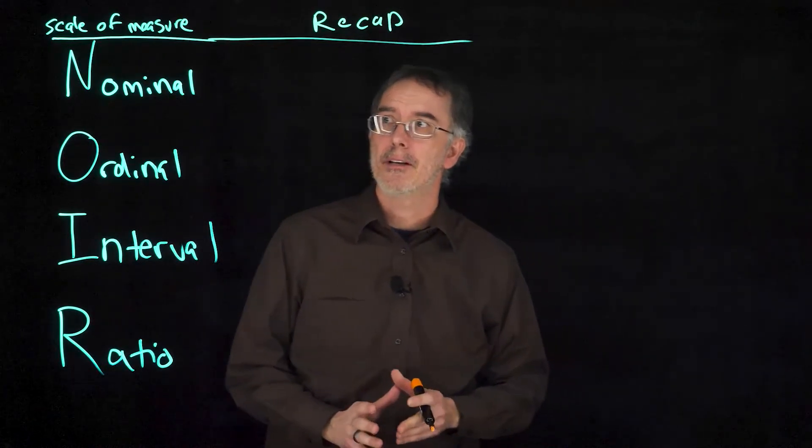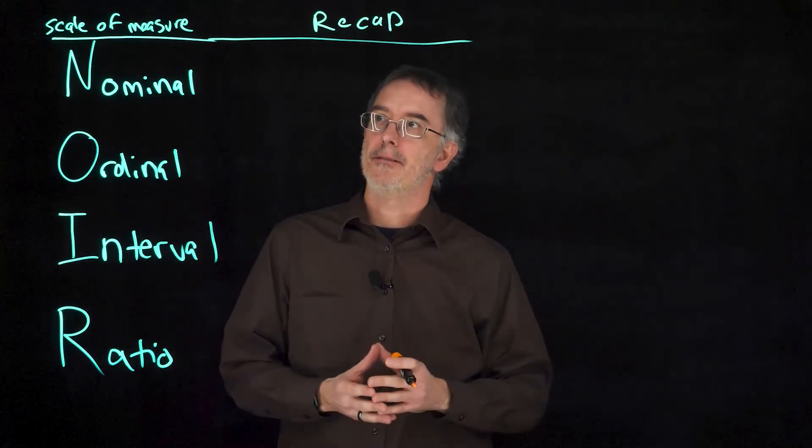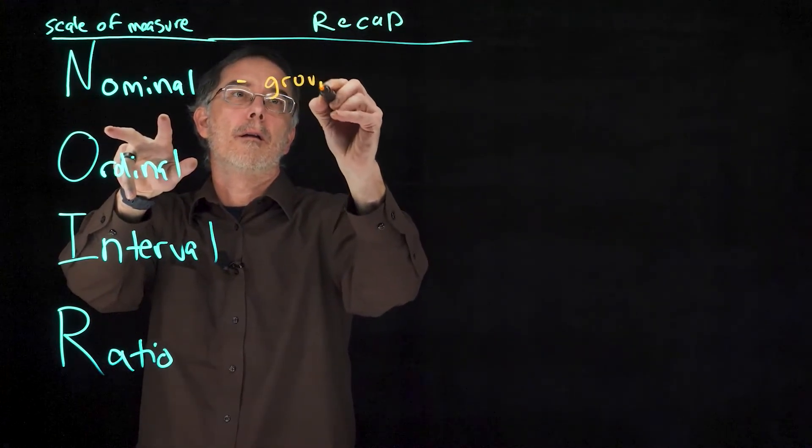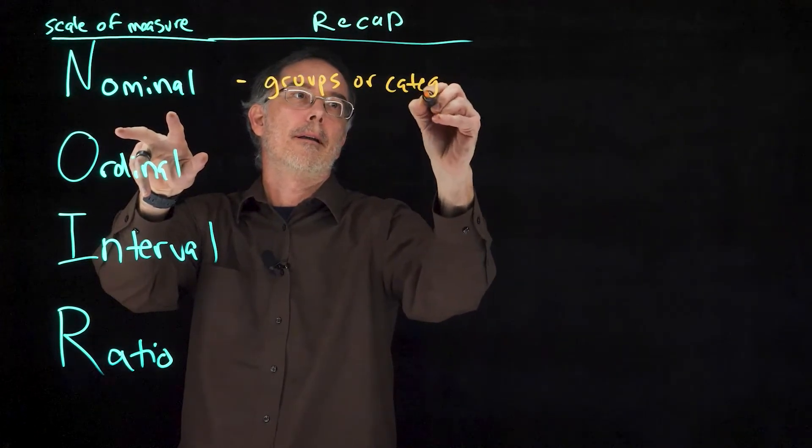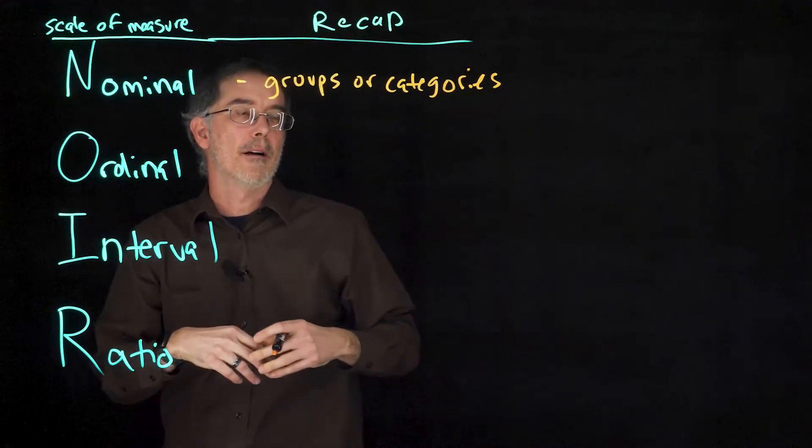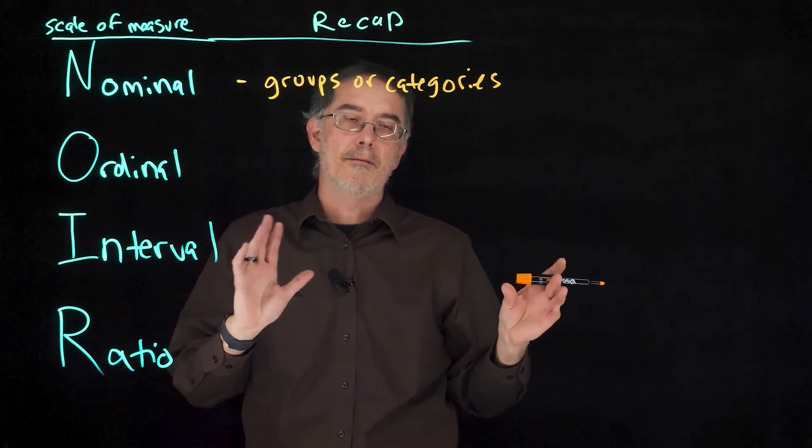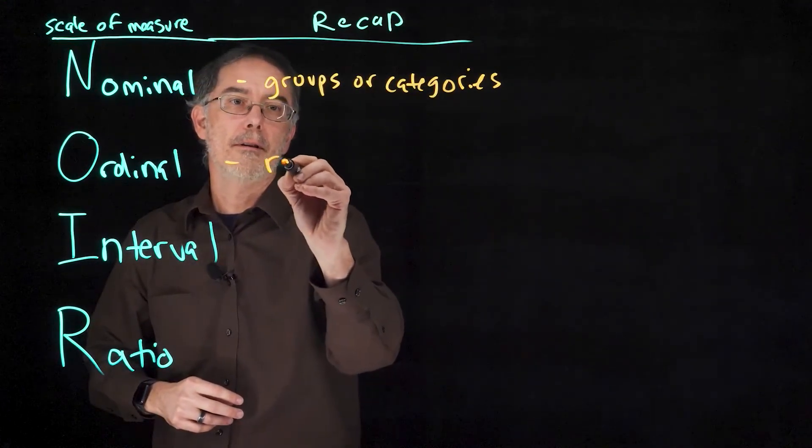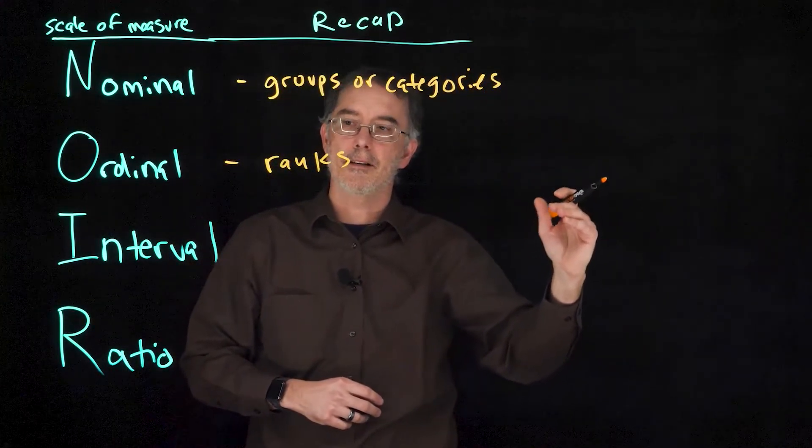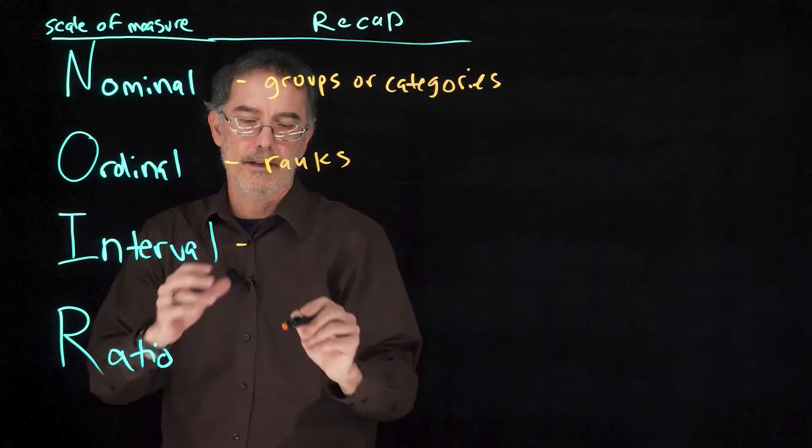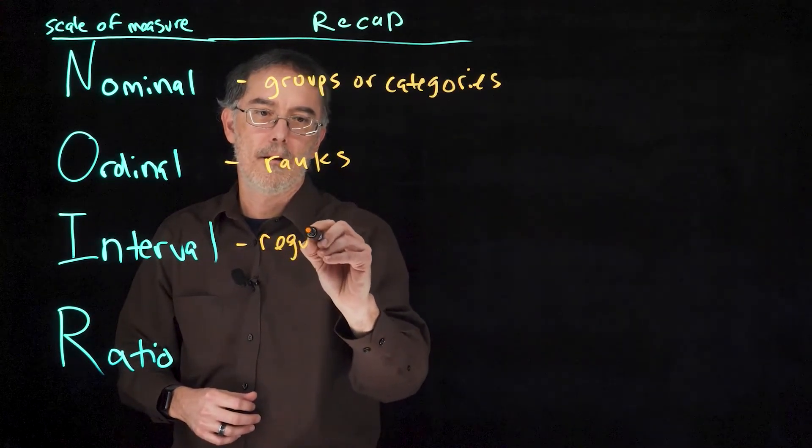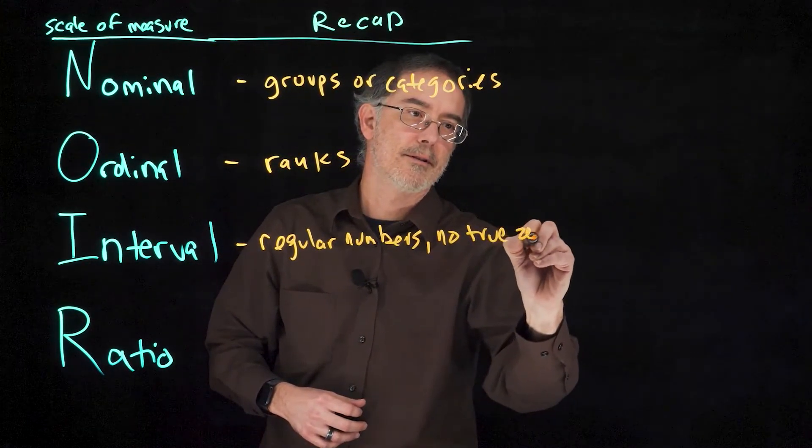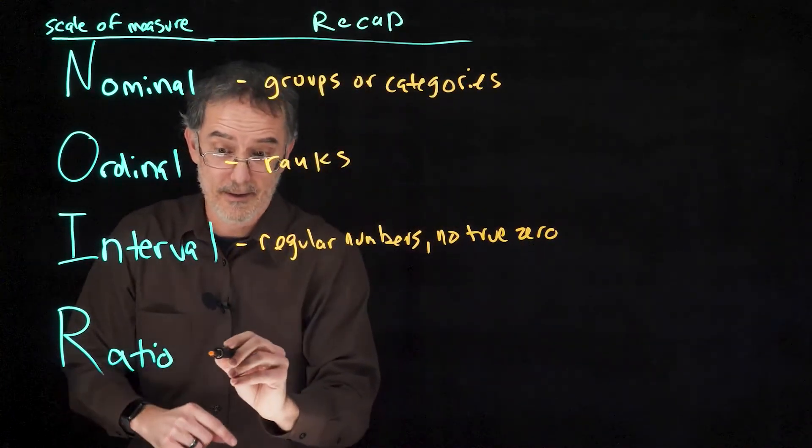I am going to do a quick recap. These are the scales of measure, sometimes called levels of measure. Nominal variables, these are groups or categories, male, female, who you voted for. It is one or the other like Democrat or Republican or something like that. Ordinals, these are ranks, first, second, third, fourth, fifth, sixth, and so on. Interval scale matter variables are regular numbers, but with no true zero. Zero does not mean that there is nothing there, or it does in ratio.